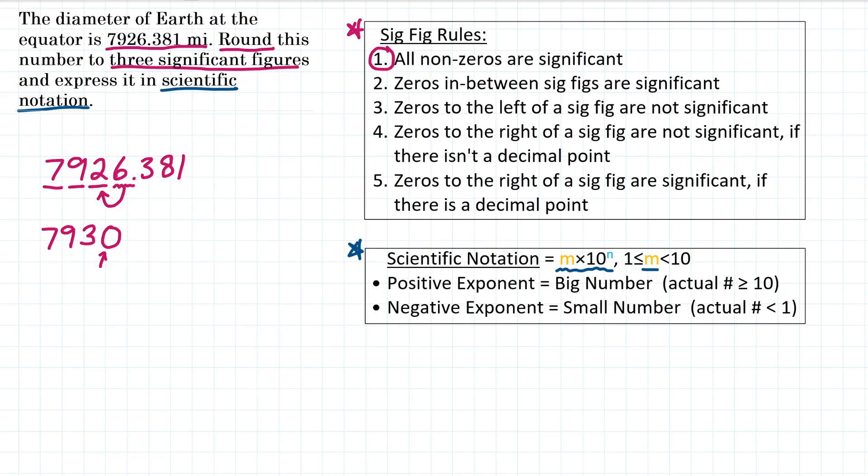So we have to move the decimal to get a number between 1 and 10. So if our number is 7,930, our decimal is going to be right after the zero, right after the ones place. So we want to move that decimal to get this number in between 1 and 10. That means we're going to move it one, two, three places to the left. And that will give us 7.93. So our number now is 7.93.